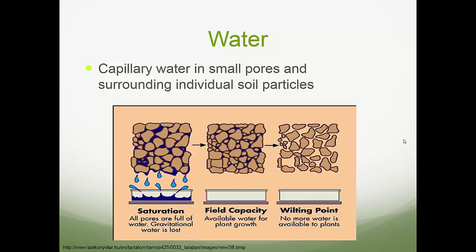Water is another key part of what allows plants to grow. In the Lake States and Minnesota, we see thousands of lakes, which means a lot of available water. We can think of water in a few different ways: saturation and capillary water. Capillary water is water in small pores surrounding individual soil particles. When saturated, all the pores are full of water and it's easily lost — like a soaking wet sponge that drips.